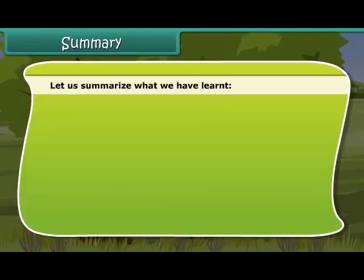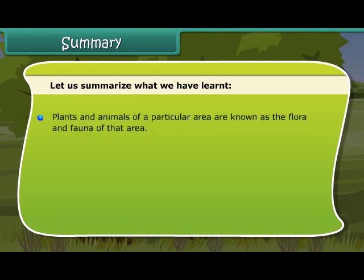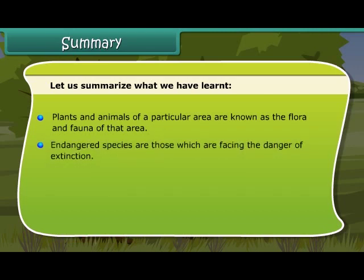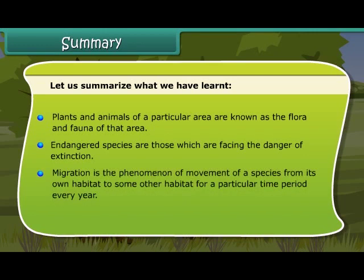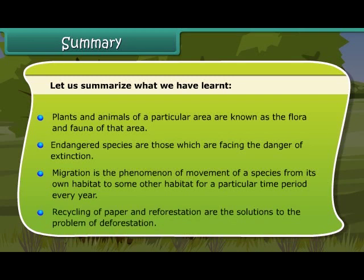Let us summarize what we have learned. Plants and animals of a particular area are known as the flora and fauna of that area. Endangered species are those facing the danger of extinction. Migration is the phenomenon of movement of a species from its own habitat to another for a particular time period every year. Recycling of paper and reforestation are the solutions to the problem of deforestation.